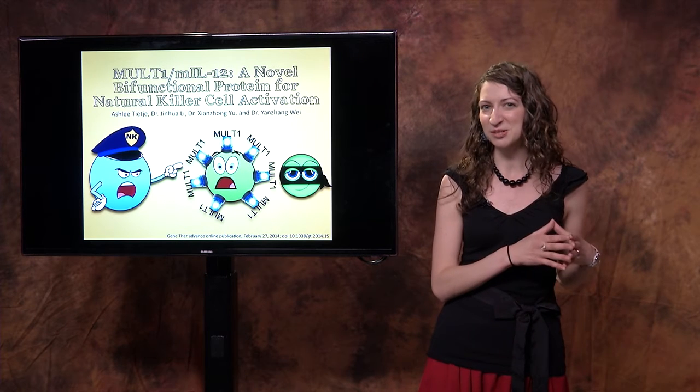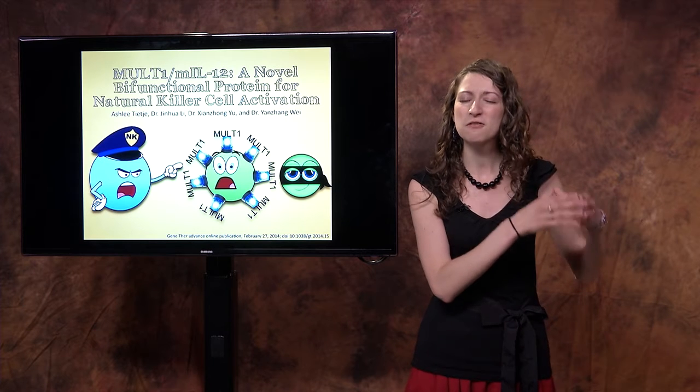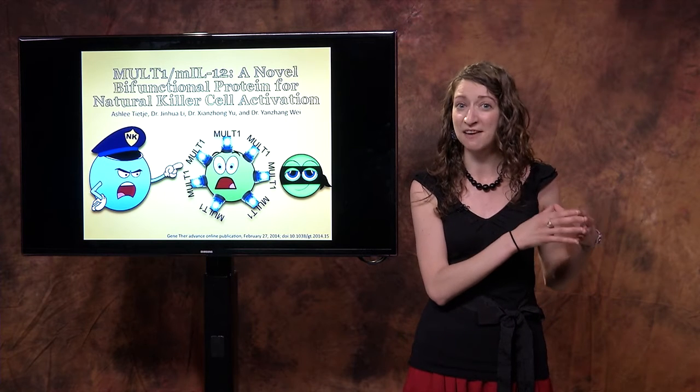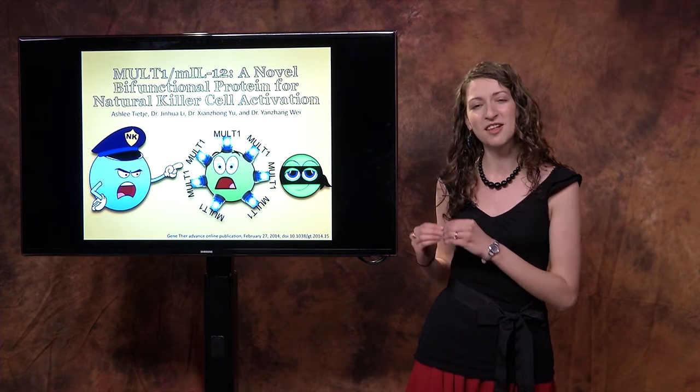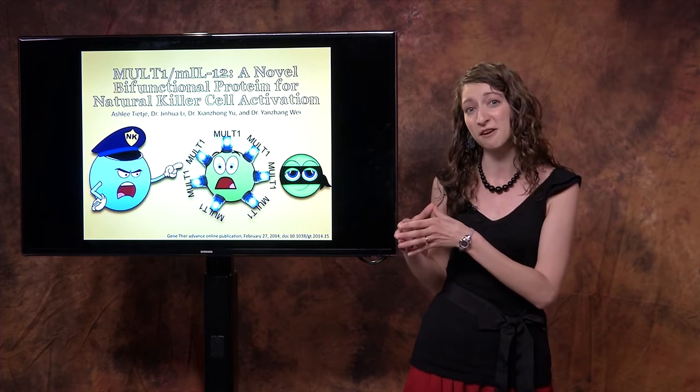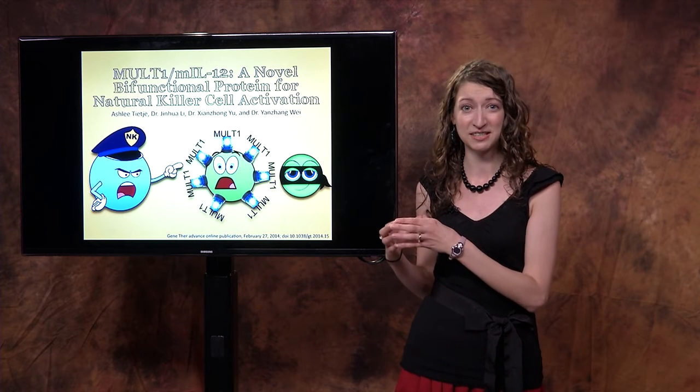The mice in the group that received the lung cancer cells that don't produce our protein had over 200 tumor nodules evident on the surface of their lungs. However, the mice in the group that received lung cancer cells that produced a lot of our fusion protein had zero tumor nodules evident on the surface of their lungs.